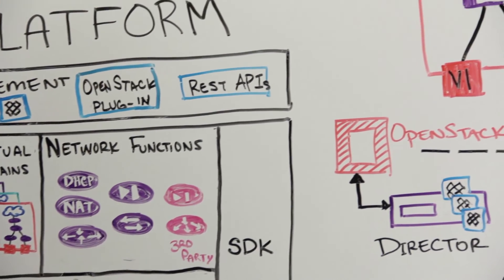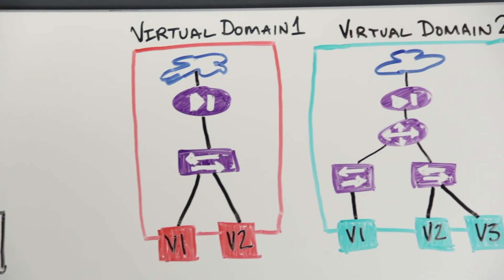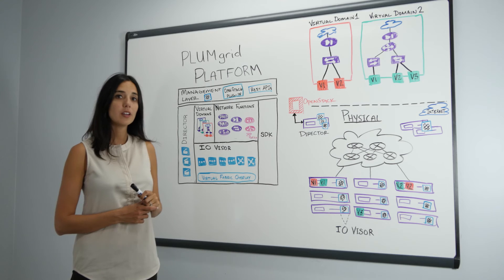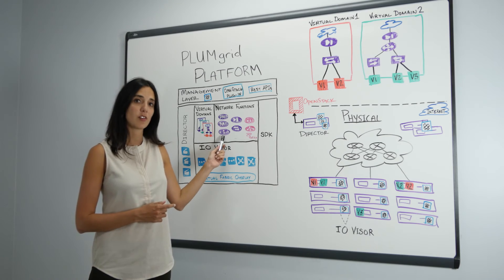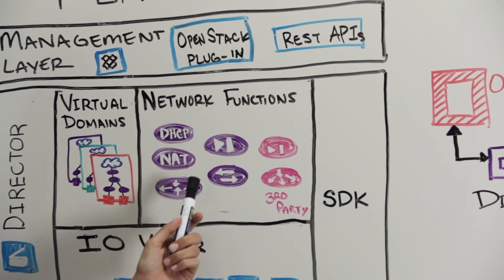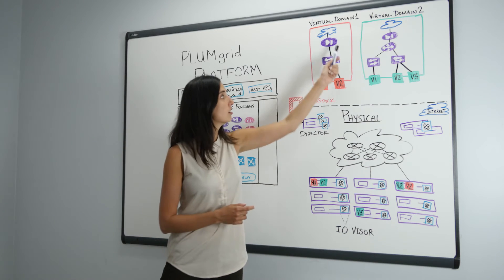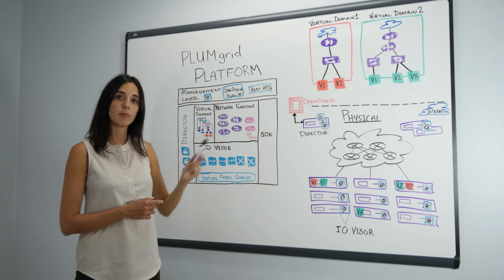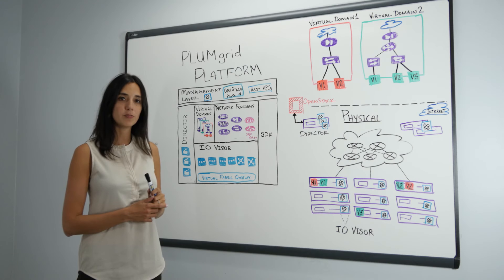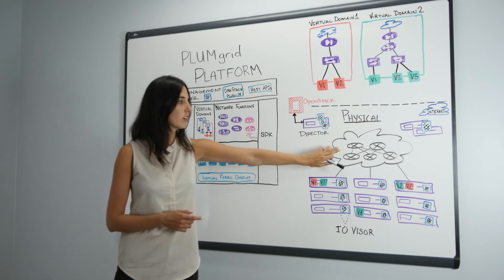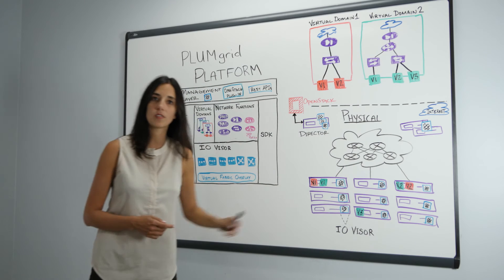Virtual domains are logical, on-demand data centers that can be created for each tenant. They are fully isolated and secure. Within each virtual domain, users can select among the portfolio of virtual network functions that PlumGrid provides. Features such as switching, routing, NAT, and DHCP can be combined together to form a topology, which is then used by applications and users of the cloud. Virtual network functions give all the features and functionality that the physical network infrastructure provides, in software, in a distributed fashion within the IOvisor layer.